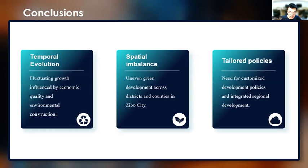In conclusion, this study uses the entropy weight method to measure urban green development of Zibo City and analyze the spatio-temporal evolution patterns of green development. In terms of temporal evolution, the green development level exhibits a trend of fluctuating growth, with the quality of economic growth and level of environmental construction being the primary influencing factors. An imbalance of green development is apparent across Zibo City. For future development, it is essential to formulate tailored development policies according to the characteristics of each district, and to strengthen the connections among these areas to promote integrated regional development.